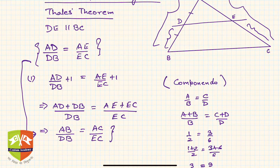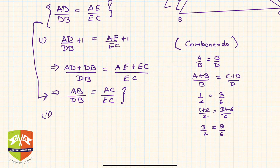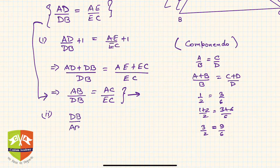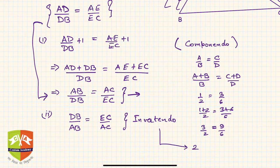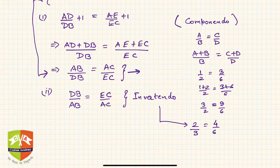Corollary 2 is obtained by inverting the ratio — taking the reciprocal. So DB/AB = EC/AC. This rule is called invertendo. Invertendo means: if 2/3 = 4/6, then inverting gives 3/2 = 6/4, and the equality still holds.